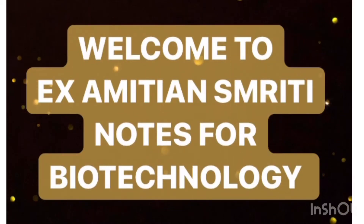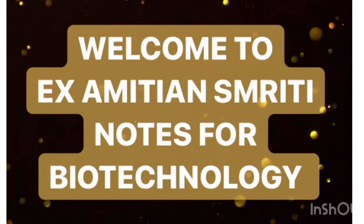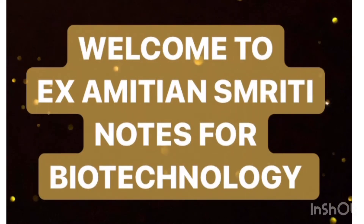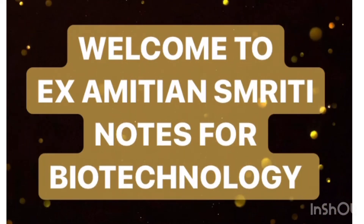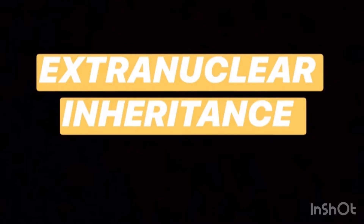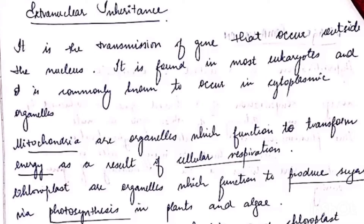Welcome to Examity and Smriti Notes for Biotechnology. In today's lecture we will study about extra nuclear inheritance with respect to mitochondria and chloroplast. Extra nuclear inheritance, or cytoplasmic inheritance, means transmission of genes that occur outside the nucleus, or when the trait is transmitted from parent to offspring through non-chromosomal cytoplasmic means.